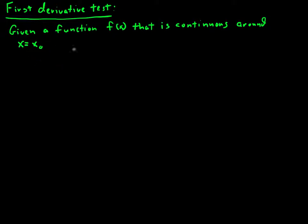So continuous around x equals x-naught, two possible things that could happen.